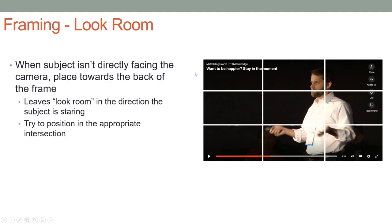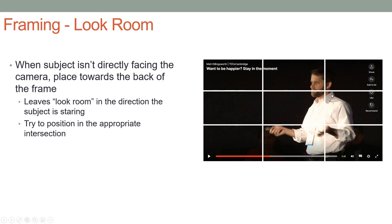Look room basically says that when the subject isn't facing directly towards the camera — in this case, he's facing the audience — you want to place him in the back third of the frame, which leaves look room on the other side. You want to try and position the subject's eyes at the appropriate intersection. So if this was perfect, maybe he would be a little bit lower and a little bit over. But this is probably close enough for a quick shot at a TED Talk.